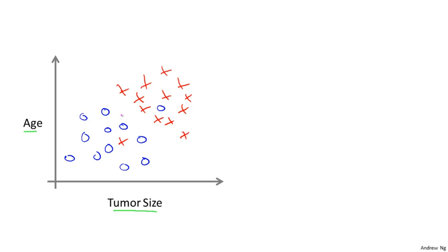In that case, maybe your dataset would look like this, where I may have a set of patients with those ages and that tumor size, and a different set of patients that look a little different, whose tumors turn out to be malignant as denoted by the crosses. So, let's say you have a friend who tragically has a tumor and maybe their tumor size and age falls around there.